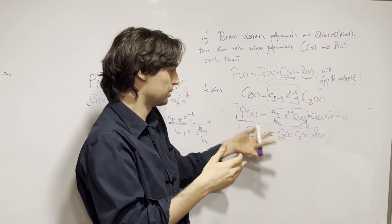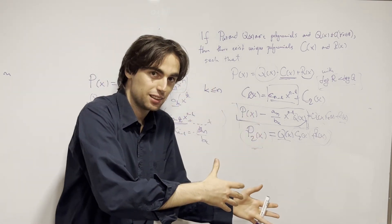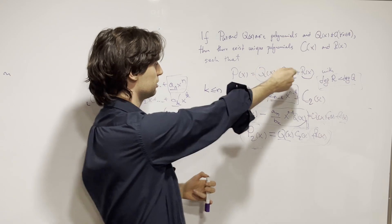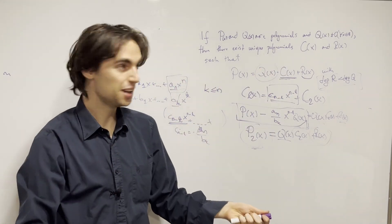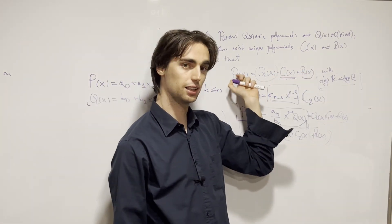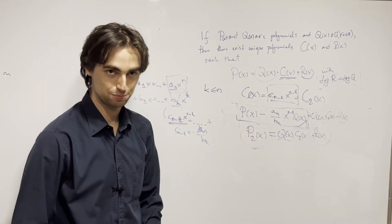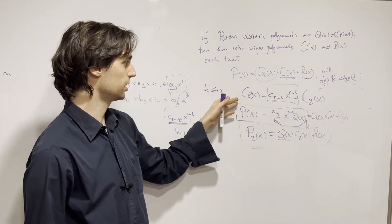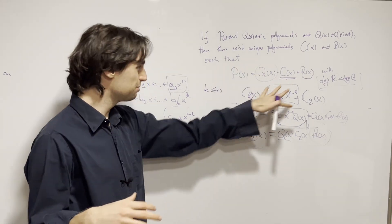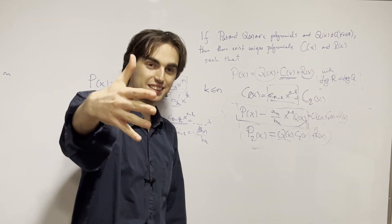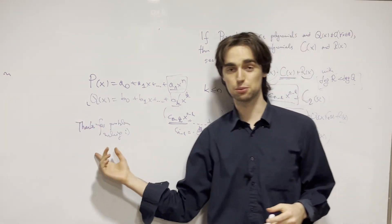And that really does solve the problem. There was uniqueness when n was less than k because c was forced to be zero and r of x was p of x. We built up from that uniqueness to have uniqueness everywhere via induction. This proves both existence and uniqueness, finishing the problem. I'll create the next lesson on polynomials soon — and as always, thanks for problem solving.